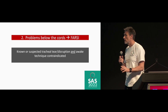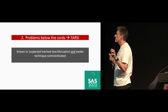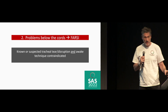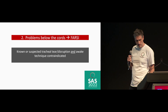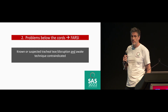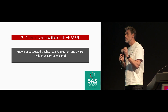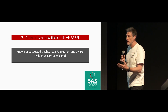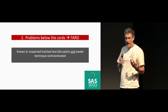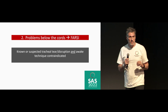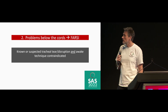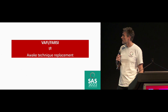The second technique, the FASI, is very specific to a suspected tracheal tear or disruption where an awake technique is contraindicated. The key is that the FASI is designed to be done as quickly as possible, because this is a patient at risk of aspiration — we don't want to muck around. We want to get in there as quickly as possible, and it's that speed that differentiates the two techniques.